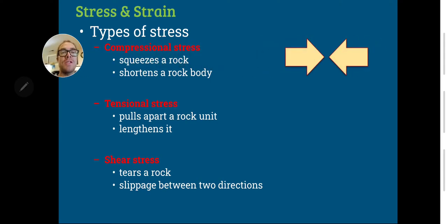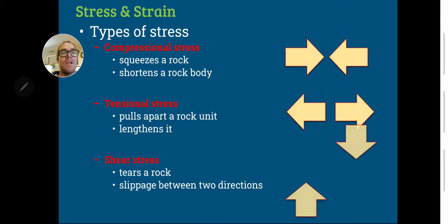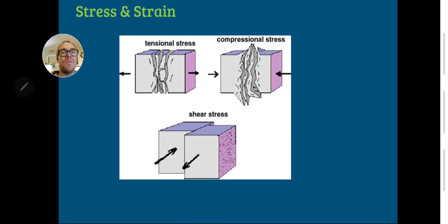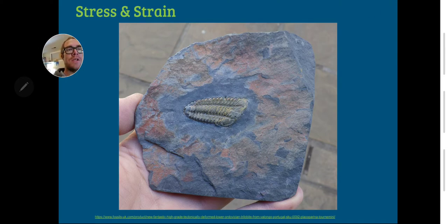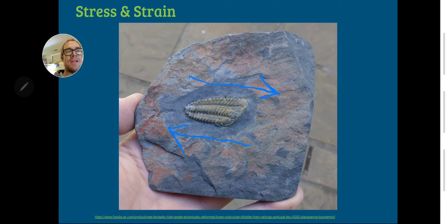Here is our compressional stress, our tensional stress, and our shear stress — and there's another representation of all three just to reinforce the point. What do you think caused the deformation seen in this trilobite? Well, it was most likely sheared and twisted. With arrows showing this way and this way, that likely caused this to look a little bit slanted like that.